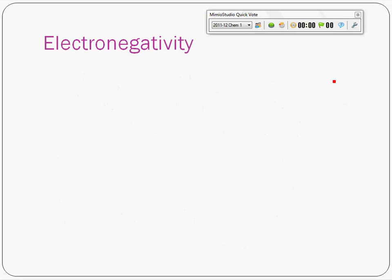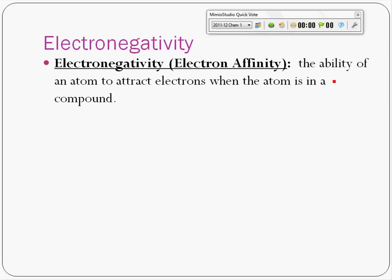The next and last trend that we're going to talk about is electronegativity. Electronegativity is defined as the ability of an atom to attract electrons when the atom is in a compound. It's basically a measure of how much an atom wants electrons.